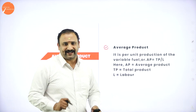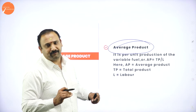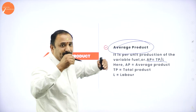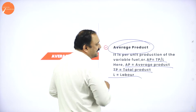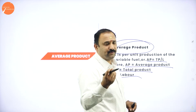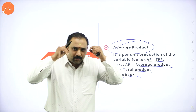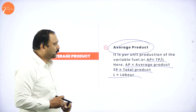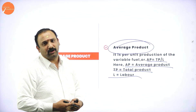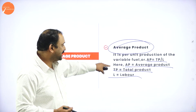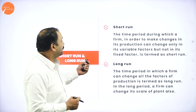The next concept is average product. As the word itself says, average product means per unit production of the variable factor. AP is equal to TP divided by L — total product divided by labor. AP is the average product, TP is total product, and L is the labor factor. On an average basis, it is like a benchmark — what is the production level on average, and based on that we take up the matter.